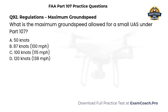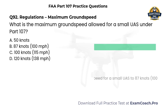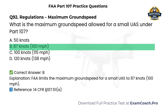Regulations. Maximum ground speed. What is the maximum ground speed allowed for a small UAS under Part 107? A. 50 knots. B. 87 knots, 100 miles per hour. C. 100 knots, 115 miles per hour. D. 120 knots, 138 miles per hour. Correct answer: B. The FAA limits small UAS ground speed to 87 knots, which equals 100 miles per hour.